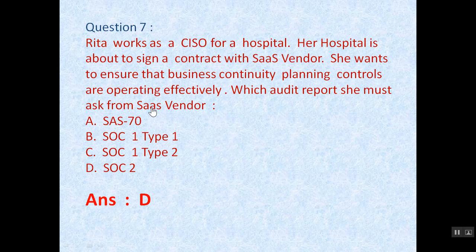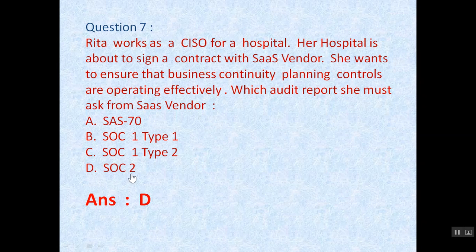For question number 7, the keyword is 'business continuity planning controls are operating effectively.' We know that both SAS 70 and SOC 1 report focus on financial controls. Hence options A, B, and C are incorrect. SOC 2 report satisfies this keyword. Hence the correct answer is D.